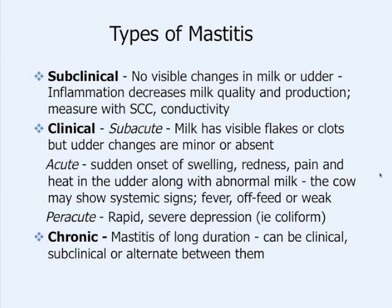Clinical mastitis, on the other hand, has visible signs across quite a range. We can see mild cases where the gland is slightly inflamed and enlarged, or a quarter that is greatly swollen, hot, and red. The milk can have clots or chunks in it, or it could be very thick like pudding or thin like water. Clinical mastitis is usually pretty obvious.